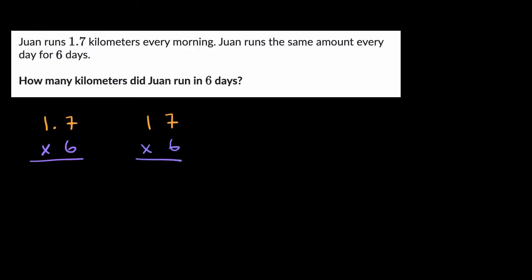So 17 times six, we've done this before or things like this, six times seven is 42. That is two ones and four tens. And then one times six, that's really 10 times six right over there. That's six plus four. So then that gives you 10. So 17 times six is 102.